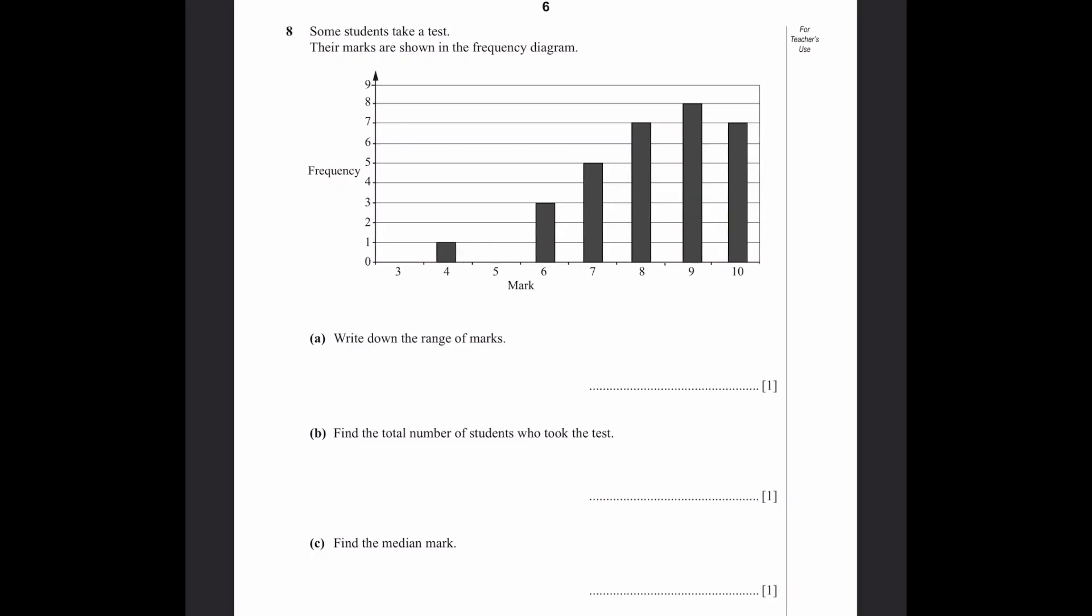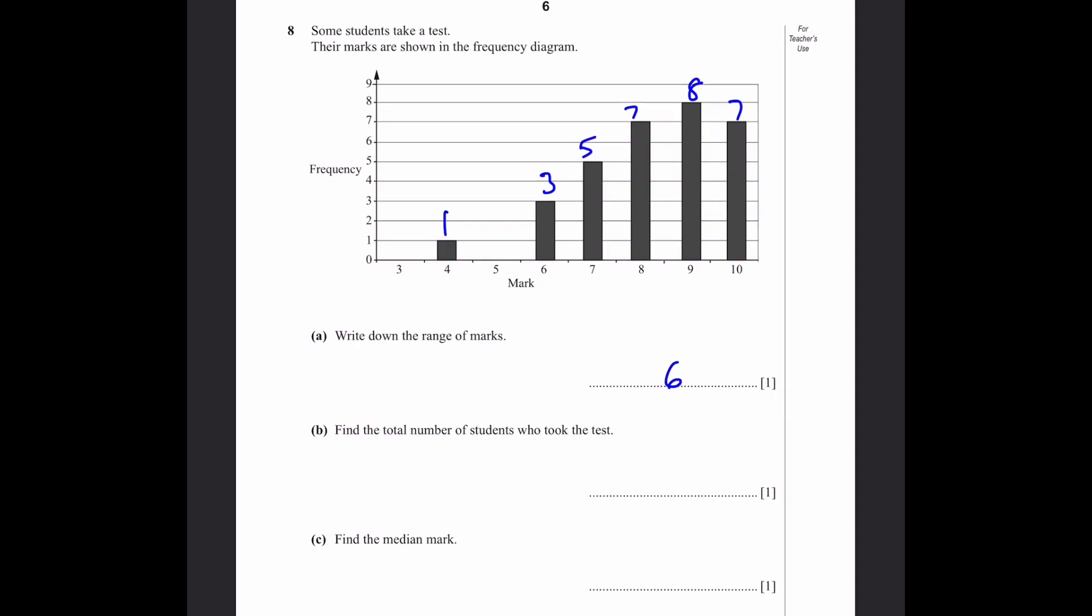Question 8. Some students take a test. Their marks are shown in the frequency diagram. Part A: Write down the range of marks. The range is the largest minus the smallest: 10 minus 4 is 6. Part B: Find the total number of students who took the test. There's 1 student at 4, then 3, 5, 7, 8, 7 students. When we add all of this up, we get 31.